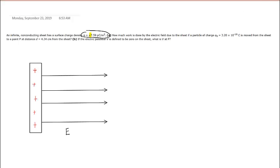Then we are told that there is a particle of charge q-naught that is moving from the sheet to a distance that is 4.34 centimeters away from the sheet. So we can represent that scenario as follows.